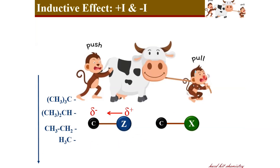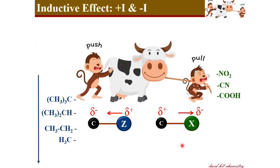On the other hand, atom X imparting minus I effect pulls the bonded pair of electrons towards itself to acquire a slight negative charge, and the carbon binding partner becomes slightly positively charged. Examples of minus I effect groups include nitro group, cyano group, carboxylic group, fluorine, chlorine, iodine, bromine, phenyl group, and hydroxyl group. The magnitude of the negative inductive effect increases in that order.